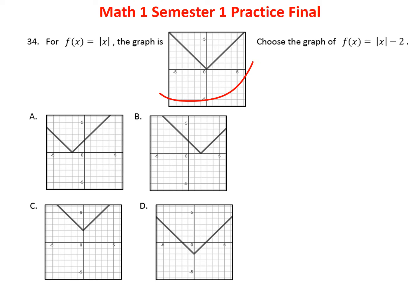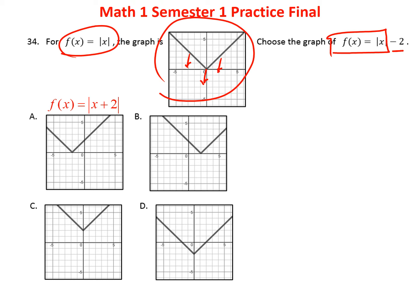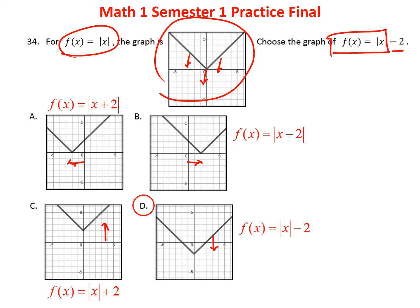Problem thirty-four: the graph of f(x) equals absolute value of x is shifted by subtracting 2. Subtracting 2 outside the bars shifts the entire graph down 2. If the value were added inside the bars, it would shift left; adding outside shifts up; subtracting inside shifts right. The one that went down is answer D.